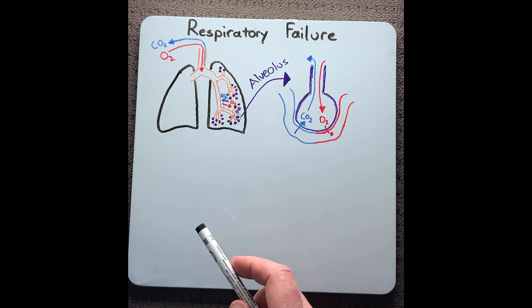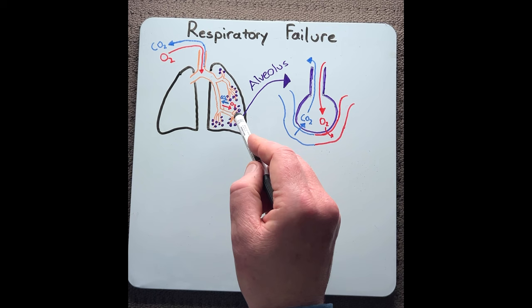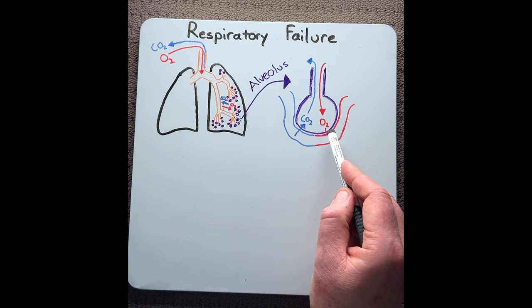The primary function of our respiratory system is for gas exchange. This is a process where oxygen is moved from the environment down our respiratory tract into our lungs, specifically to our alveoli, where oxygen is then put into the bloodstream to ensure a constant supply of oxygen to our body's tissues.